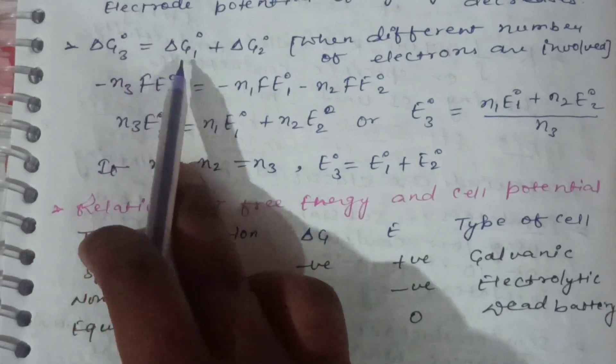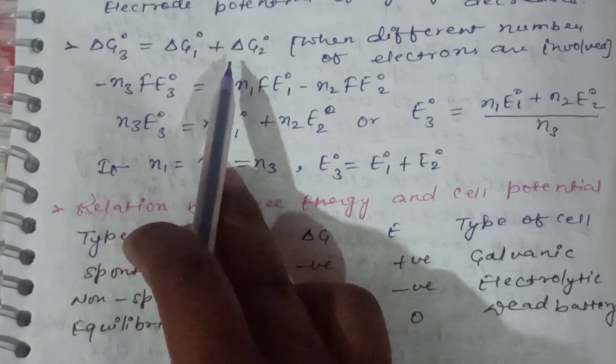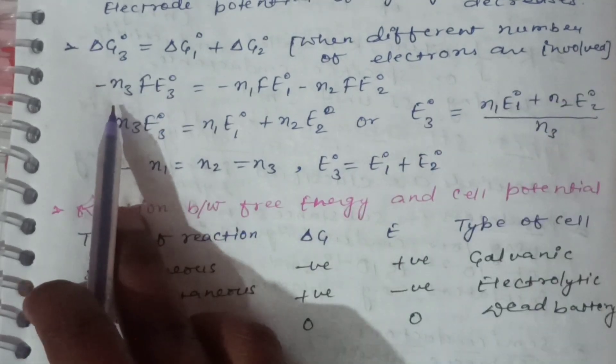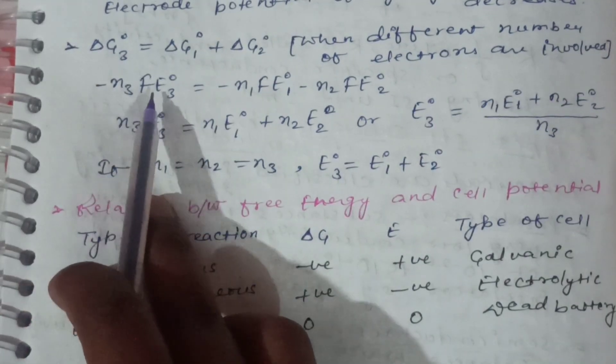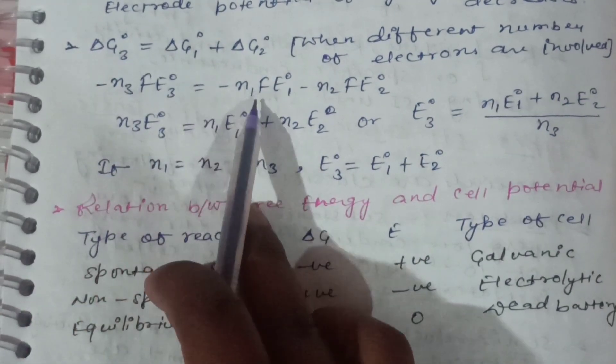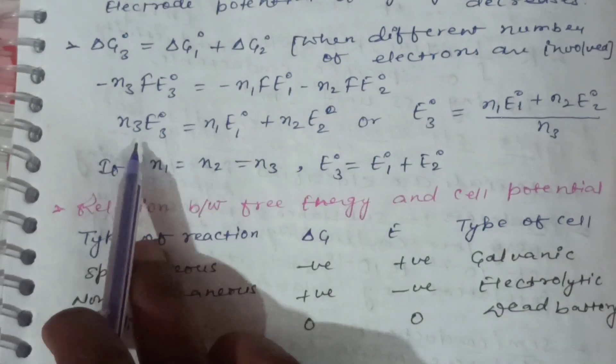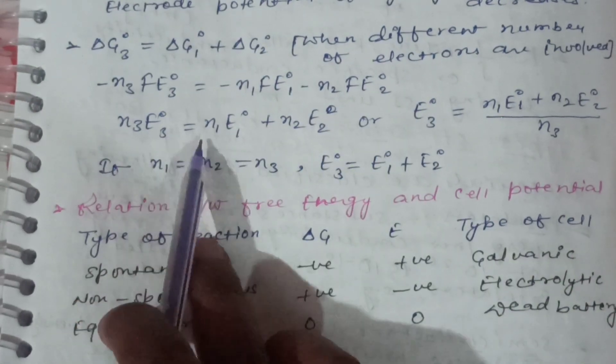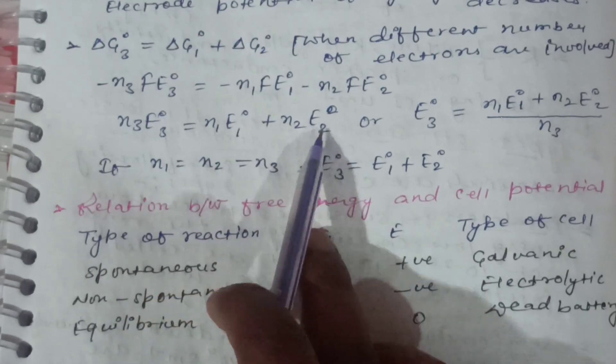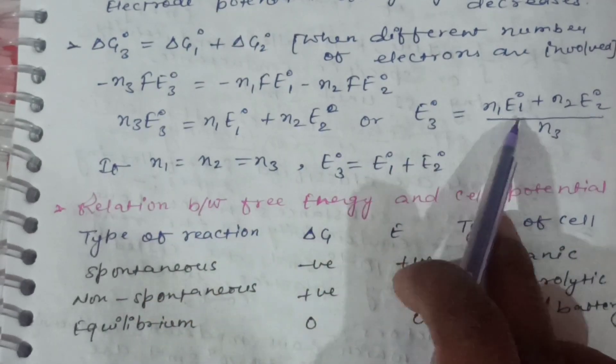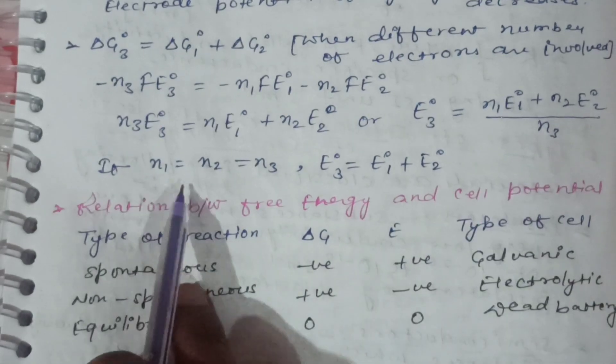ΔG°₃ is equal to ΔG°₁ plus ΔG°₂ when different number of electrons are involved. Minus n₃FE°₃ is equal to minus n₁FE°₁ minus n₂FE°₂. So n₃E°₃ is equal to n₁E°₁ plus n₂E°₂, or E°₃ is equal to (n₁E°₁ plus n₂E°₂) upon n₃.